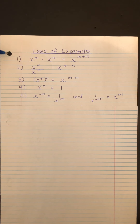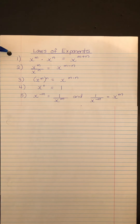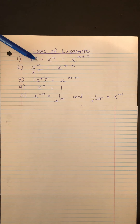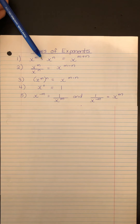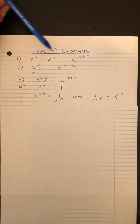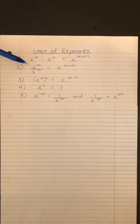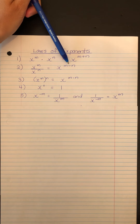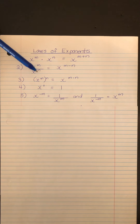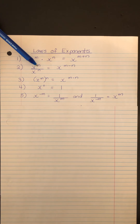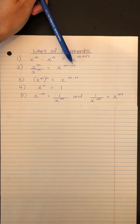We have five main laws of exponents written, and it's important to realize that these are powers of the same base — the base here is x. When multiplying powers of the same base, we simply add the exponents. When dividing powers of the same base, we subtract exponents. It's important that n is subtracted from m, so we end up with m minus n.